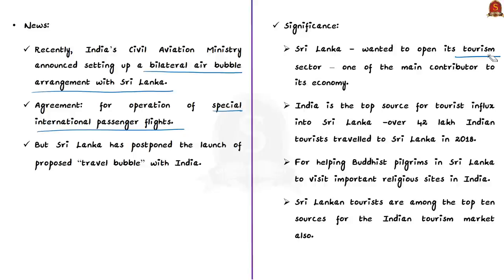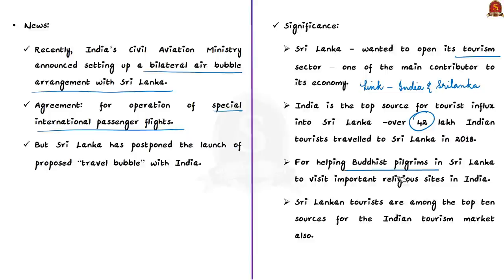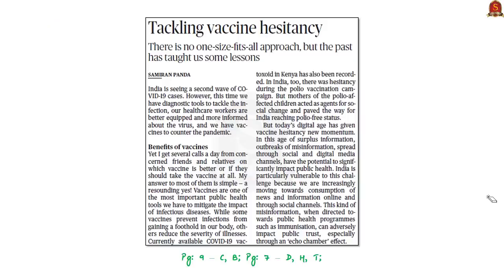Tourism is an important link between India and Sri Lanka, as India is a top source of tourist influx into Sri Lanka. As per Ministry of External Affairs data, over 42 lakh Indian tourists traveled to Sri Lanka in 2018. For India, the air connectivity is also important to help Buddhist pilgrims in Sri Lanka visit important religious sites in India. It should be noted that Sri Lankan tourists are among the top 10 sources for the Indian tourism market.